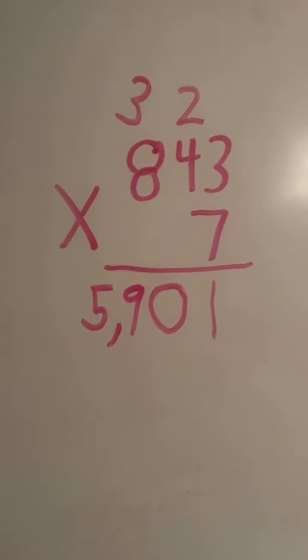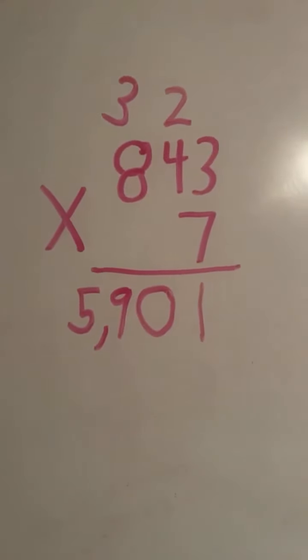And we have our final answer. 843 times 7 equals 5,901.